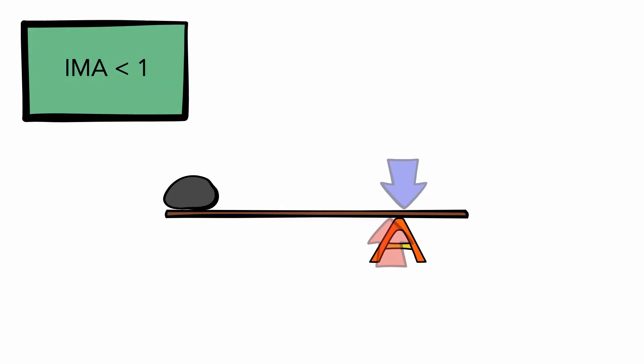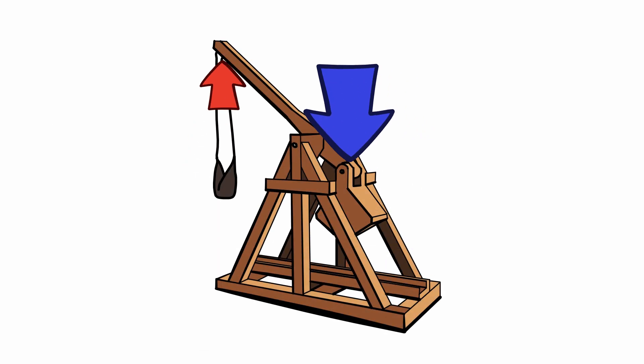When mechanical advantage is less than 1, the trade-off is it actually needs more force to be applied compared to the force that's produced. Rather than making it easier, the benefit of having a mechanical advantage less than 1 is actually an increased range of motion. A trebuchet uses this to fling a rock over great distances.